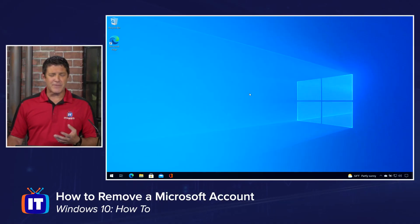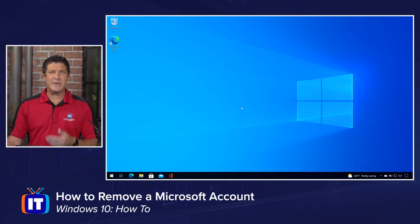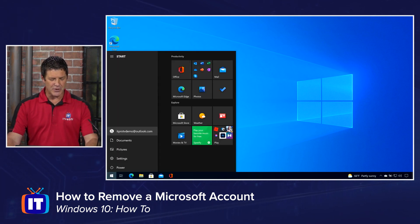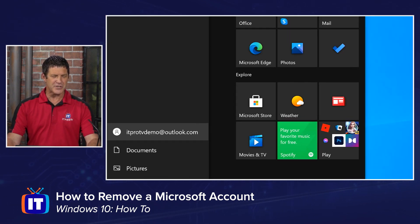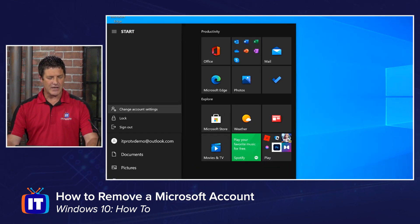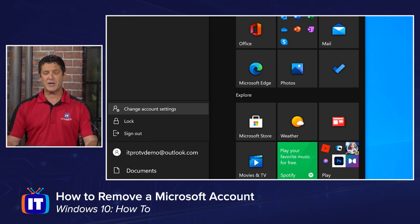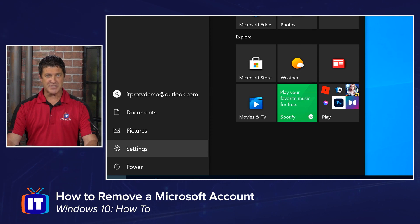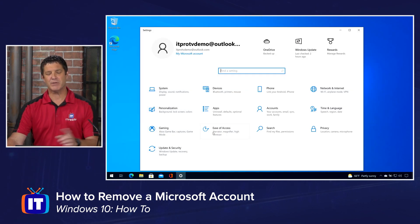Join me on my screen here. The first thing we're going to do is find out where we need to go to make this change. There are a couple of ways you can get there. I'm going to go to my Start menu — I can either go to this little icon for the currently logged-on user. You can see I'm logged on using itprotvdemoatoutlook.com, and that's a Microsoft account. If I click on that, I'll have the option to change account settings. But I can also just go to my Settings and get to the same place — either way takes you to the same place.